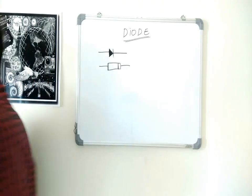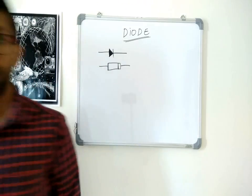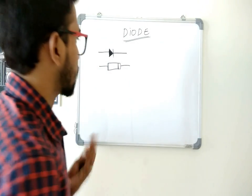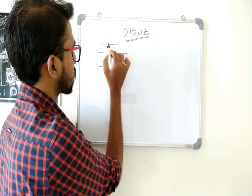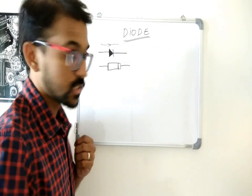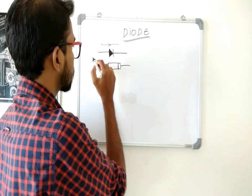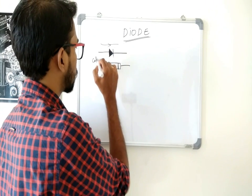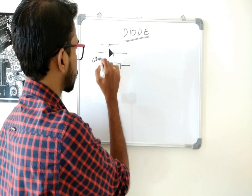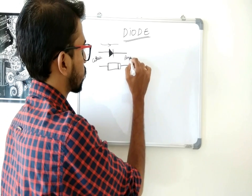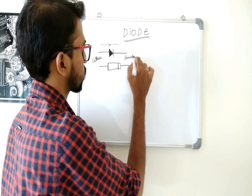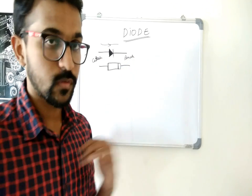As I said, it allows current to pass only in one direction, and this side is called the cathode. This is the arrow of a diode.